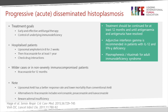Liposomal amphotericin B has a better response rate than conventional amphotericin B and has a lower mortality, so it is the preferred drug if available and affordable. If itraconazole cannot be given, then voriconazole, posaconazole, or isavuconazole may be useful. Fluconazole is definitively less effective against histoplasmosis than these other drugs.